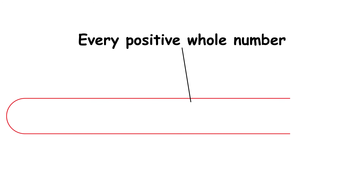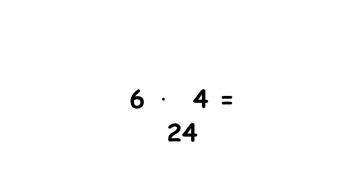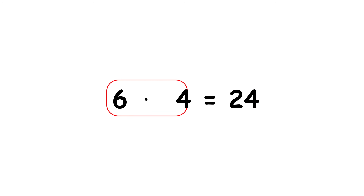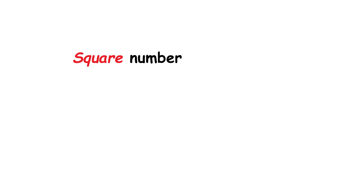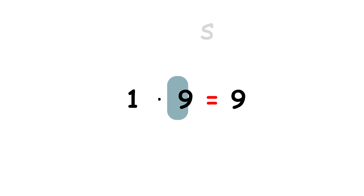Every positive whole number can be expressed as a product of a square number and a square-free number. Using our example of 24, we can divide it by its largest square number factor, which is 4. That gives us 24 divided by 4 equals 6. We can reverse this statement: 6 times 4 equals 24. As you can see, 6 is a square-free number, 4 is a square number, and we have successfully written 24 as the product of these numbers. Even a square-free number can be expressed as itself times 1 — for example, 30 times 1 equals 30. Also, a square number can be expressed as 1 times itself — for example, 1 times 9 equals 9. In both cases, this is still a square-free number times a square number. We'll call the square-free factor R, and we'll call the square factor S squared.